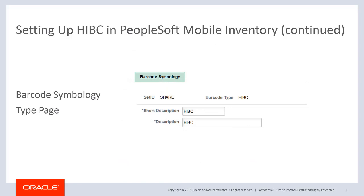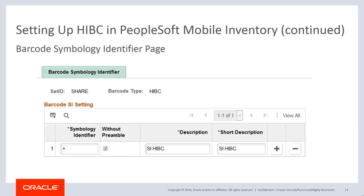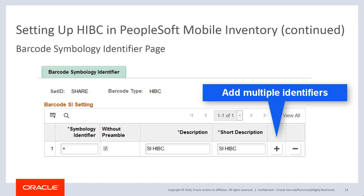To begin the HIBC setup, use the Barcode Symbology Type page to define a HIBC barcode symbology type that can be parsed. The Symbology Identifier is a unique identifying value assigned to a specific barcode symbology. The HIBC barcode is indicated with a plus sign, which is added to the front of the actual data string. Select the Without Preamble checkbox to indicate if a character preamble is present on the scanner. Enter values in the Short Description and Description fields and click Save. Multiple symbology identifiers can be associated to a barcode symbology type.